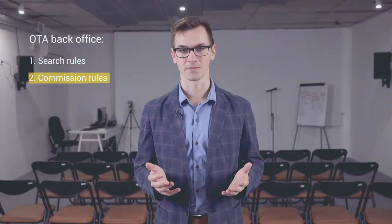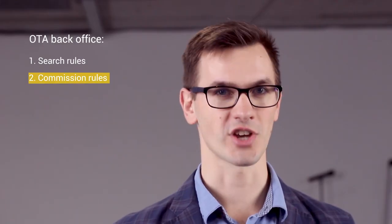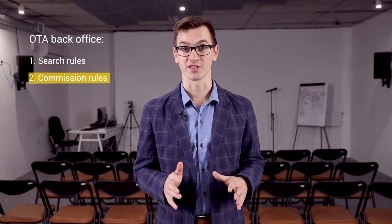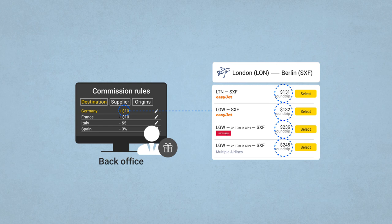Besides these search results themselves, travelers check prices. And the price that a traveler sees on the website is a combination of base price that an OTA gets from a supplier in the commission. By the way, check my previous video to learn more. Product managers have their interface for commission rules. Basically, commission rules interface allows these guys to configure how commissions get applied to different suppliers, origin and destinations, or different travel products.